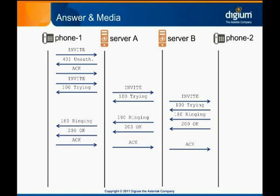When phone 2 receives the acknowledgement of the 200 OK, the call is fully established. At this point, media traffic flows in both directions from each phone, through both servers, to the other phone. The media is carried using RTP on the port and codec that were negotiated in the SDP messages embedded in the SIP INVITEs. For simplicity, we have not shown that part of the dialog.